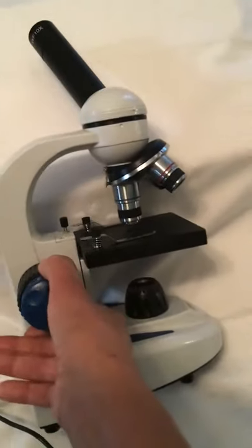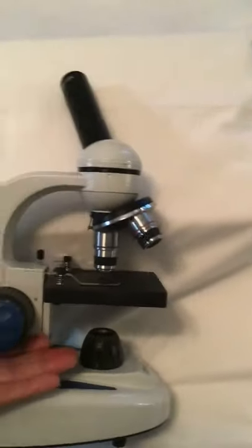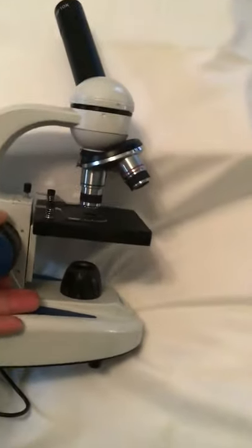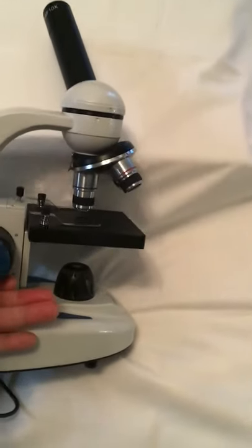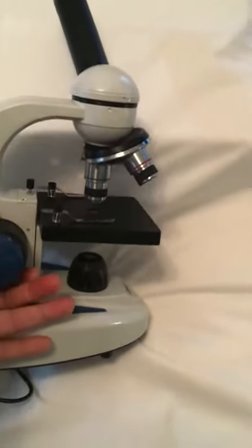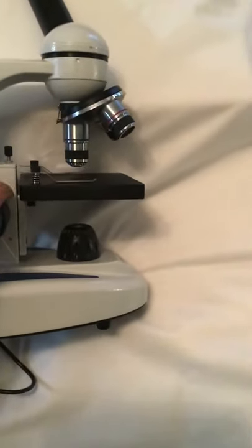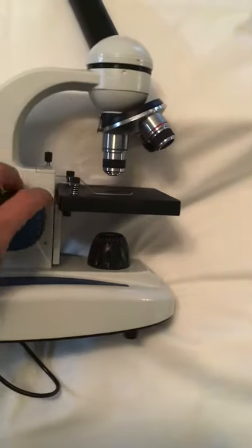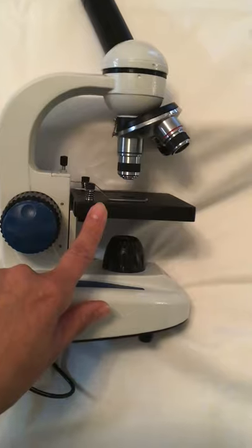I'm going to demonstrate the coarse adjustment. So I've got this laying on its side, but here you can see the stage is coming down. This is called the coarse adjustment because it changes the course of the stage.